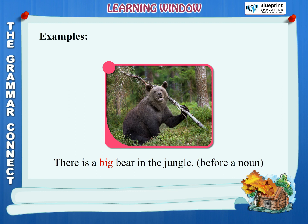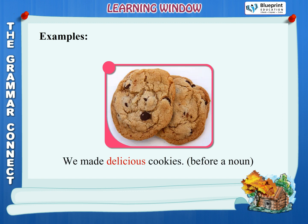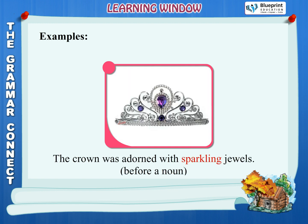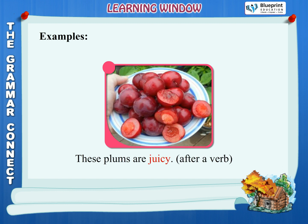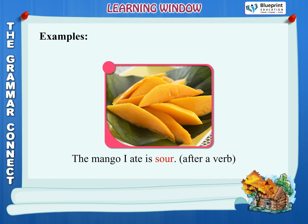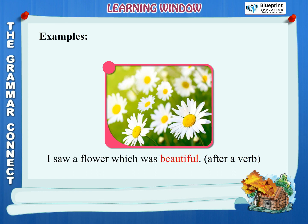Examples. There is a big bear in the jungle — before a noun. We made delicious cookies — before a noun. The crown was adorned with sparkling jewels — before a noun. These plums are juicy — after a verb. The mango I ate is sour — after a verb. I saw a flower which was beautiful — after a verb.